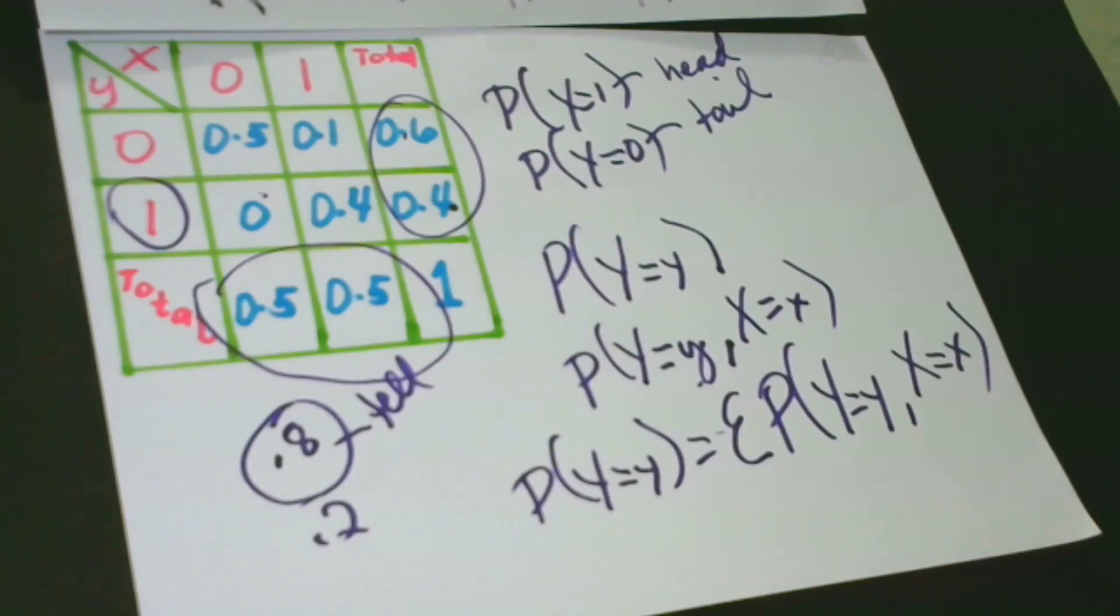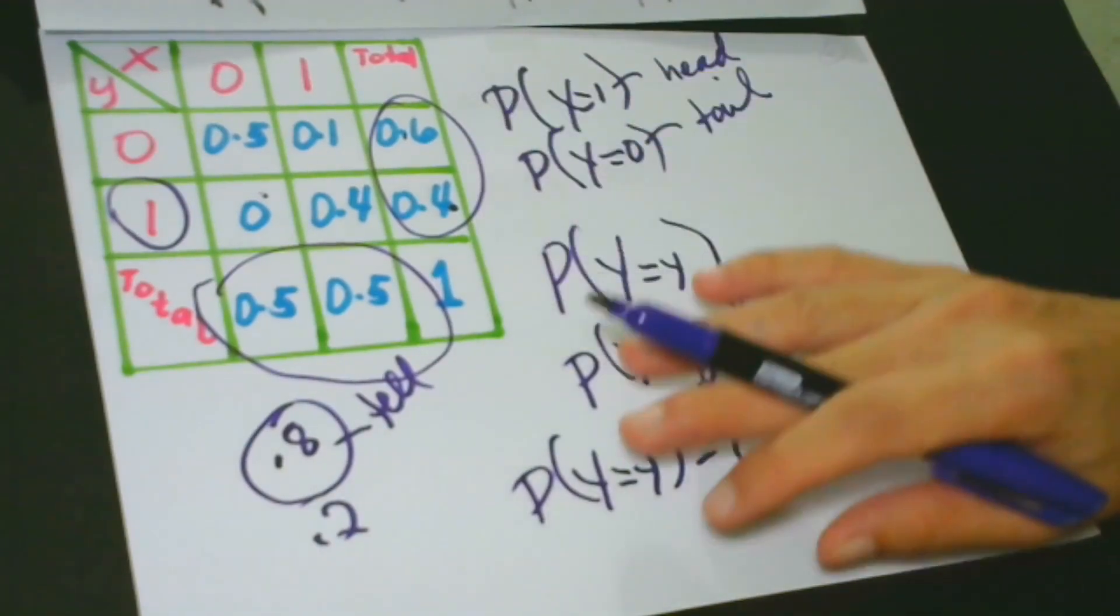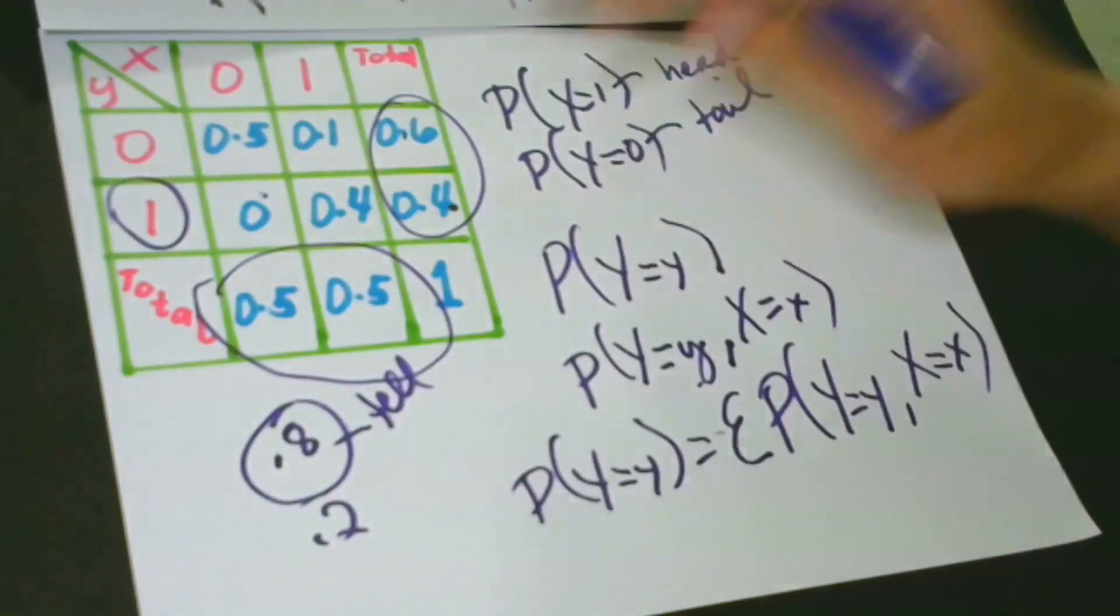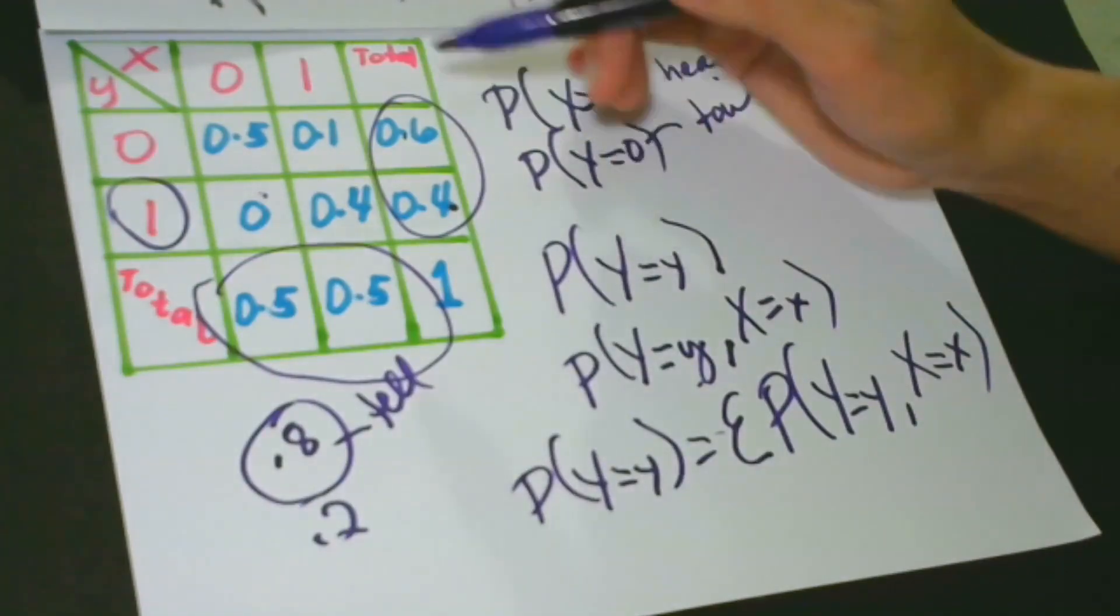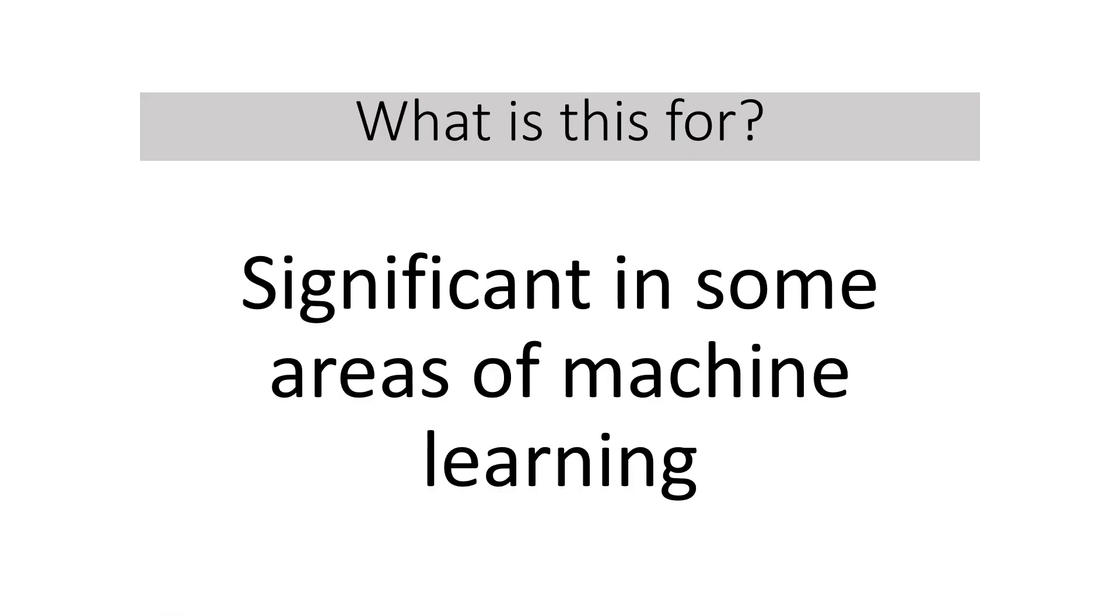In lesson number 5, I have discussed about this uncertainty in the communication. The beauty of marginalization is that we can end up with conditional probability. We can also go from joint probabilities to conditional probabilities.